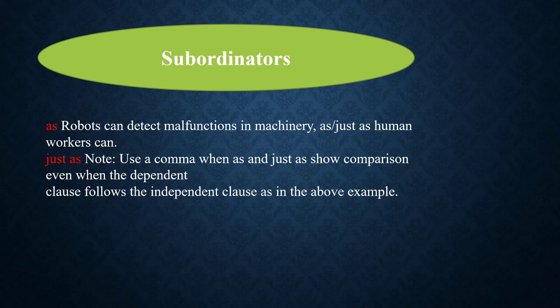The point-by-point method, also called the slice or alternating method, compares items one point at a time. For example, comparing high school and college: cost of attending, workload, and social aspects. Using this method helps readers see the points more clearly. The essay blueprint includes five paragraphs: introduction with thesis (items to be compared, reason for comparison, main points), three body paragraphs (cost, workload, social aspects), and a conclusion that summarizes or restates the main points and may indicate a preference for one of the two items.